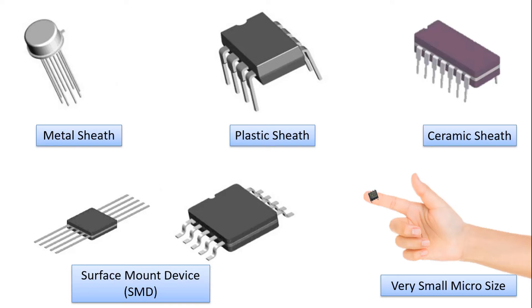Operational amplifiers are produced with metal sheath, plastic sheath, ceramic sheath, surface mount that is SMD, or in very small microsizes, depending on the conditions and conditions of the places where they will be used.